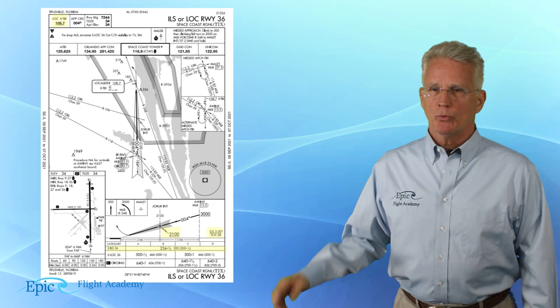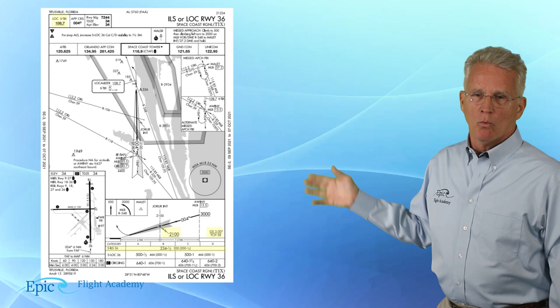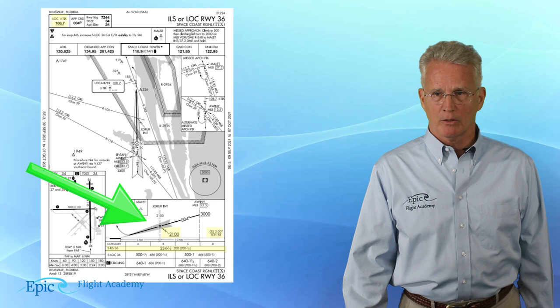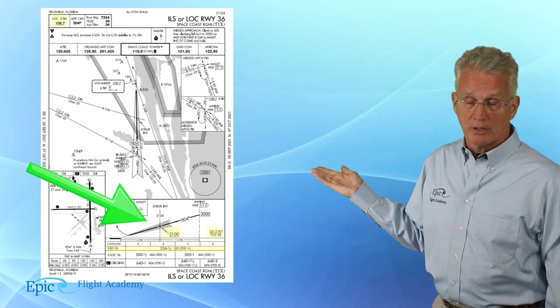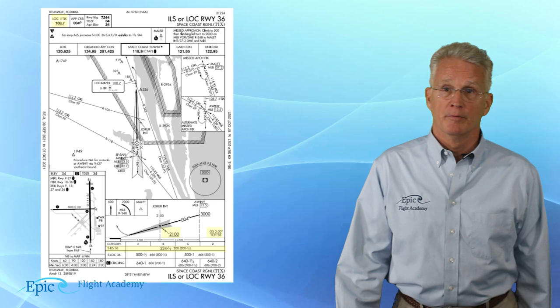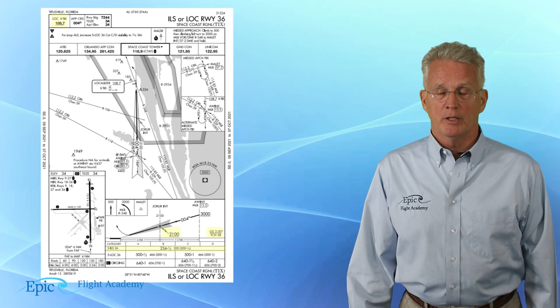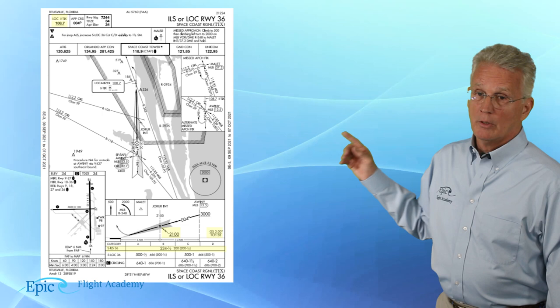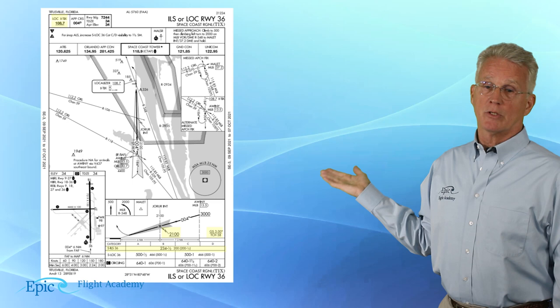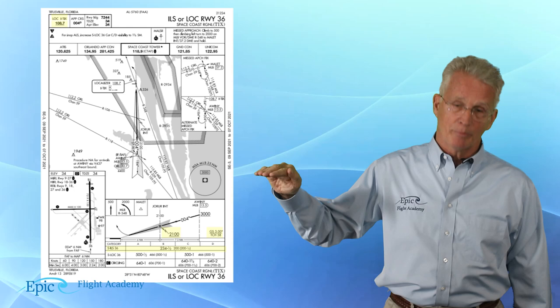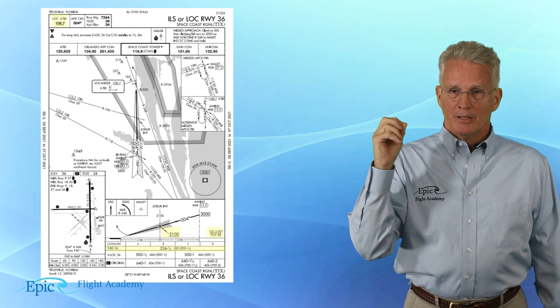As we look at this approach plate in more detail, coming down to the profile view, you can see highlighted in yellow the approach angle, which is typically 3.0 degrees — and sure enough, here it is at Space Coast: 3 degrees. We've also highlighted the glide slope intercept altitude, shown by this lightning bolt. The chart shows it is 2,100 feet. So ideally, I'm coming in below and intercepting the glide slope from below, right at the spot the lightning bolt indicates.